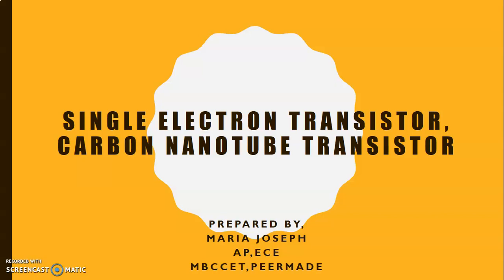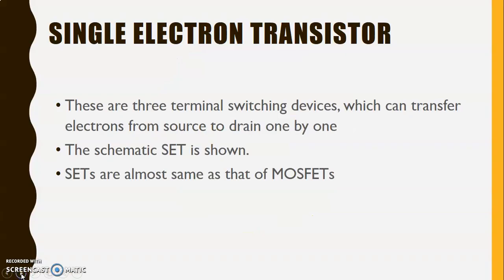The first topic is single electron transistor. Single electron transistors are basically three terminal switching devices which can transfer electrons from source to drain one by one. The schematic of SET or single electron transistor will be shown in the next slide. SETs are almost the same as that of the MOSFETs.